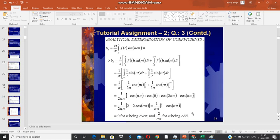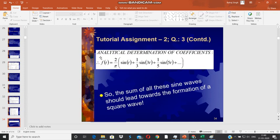Now, once we obtain the value of bn after substituting the limits, so here is how we can write the function. So, f(t) becomes taking 2 by pi common, sin(t), here omega is 1 because the source frequency, source function frequency was also 1 radian per second, so here omega is 1. Then, we have the third harmonic having frequency 3*omega and then 5*omega and so on. So, all these are sine waves with decreasing amplitudes. That again is a general behavior of Fourier series. The higher harmonics have smaller amplitudes. So, the sum of all these sine waves, it should lead towards the formation of a square wave.